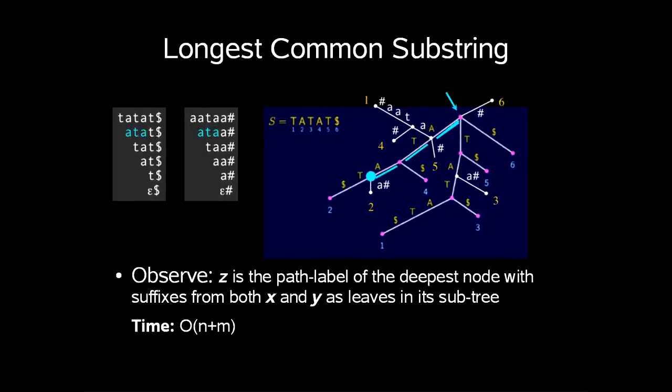What you need to observe about this is that z is the path label of the deepest node with suffixes from both x and y as leaves in its subtree and the time complexity will now be order n plus m.